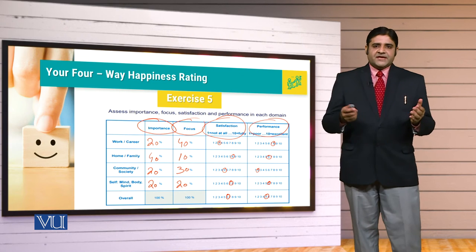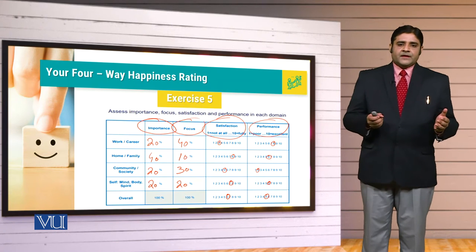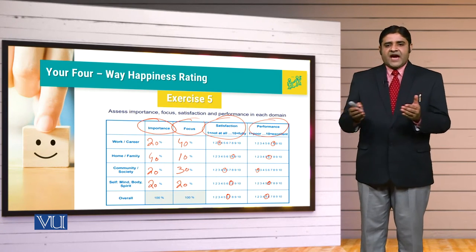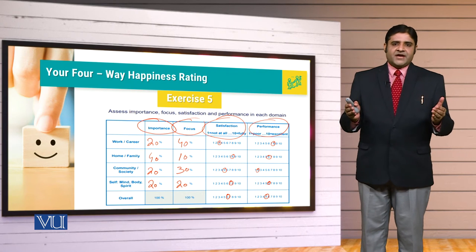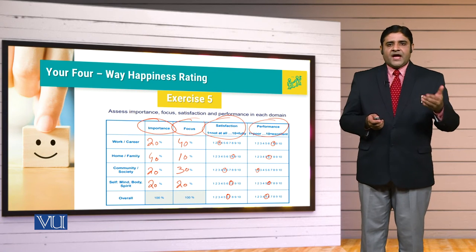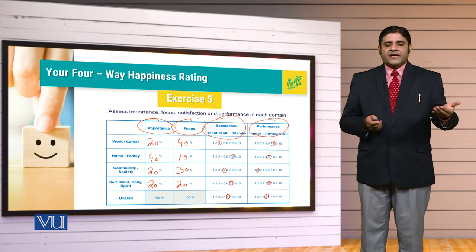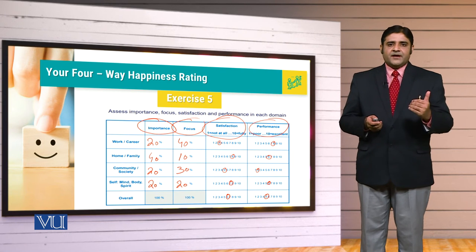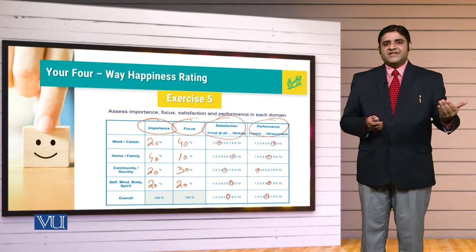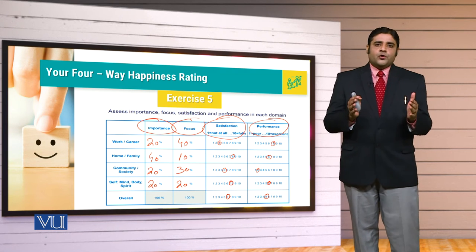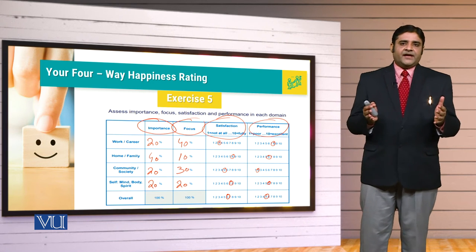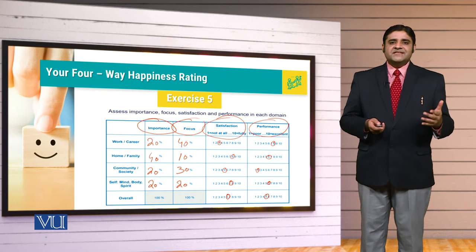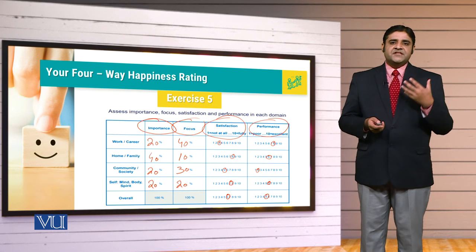Dear students, as we have seen in this table, our importance, focus, satisfaction, and performance are not synchronized — they are not patterned together. In some places I may be giving more attention but my performance is lower, and in other places I may be giving less attention but my performance could be higher. So you need to create a balance — the main purpose of all these exercises is that you are able to create a balance in your 360 degrees of life.